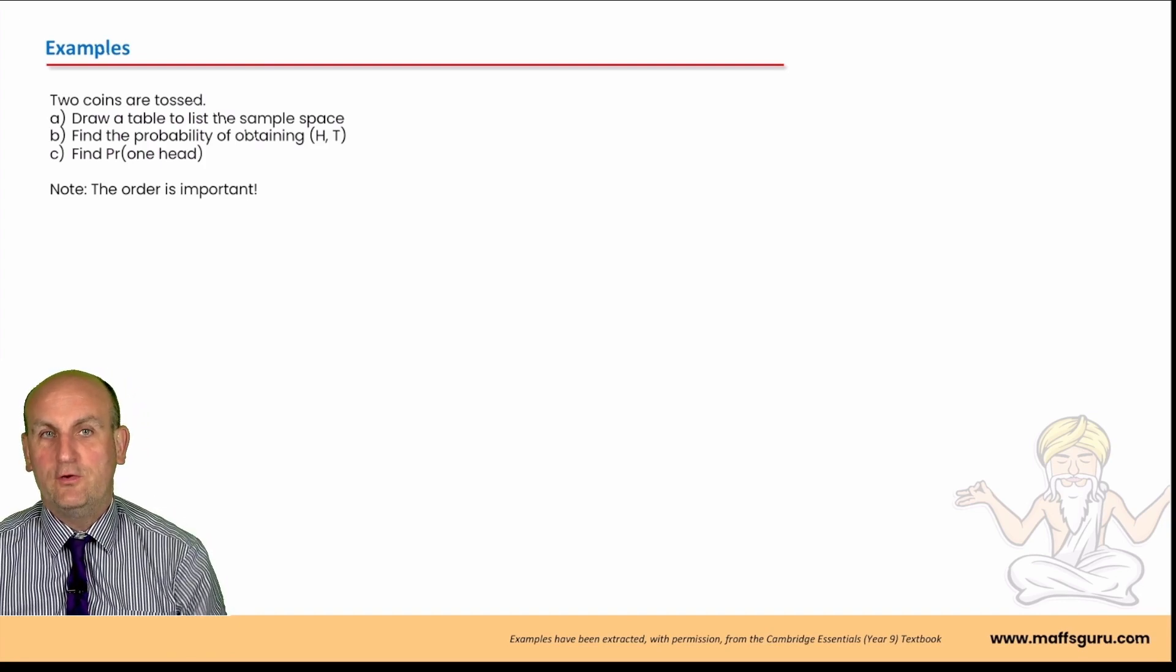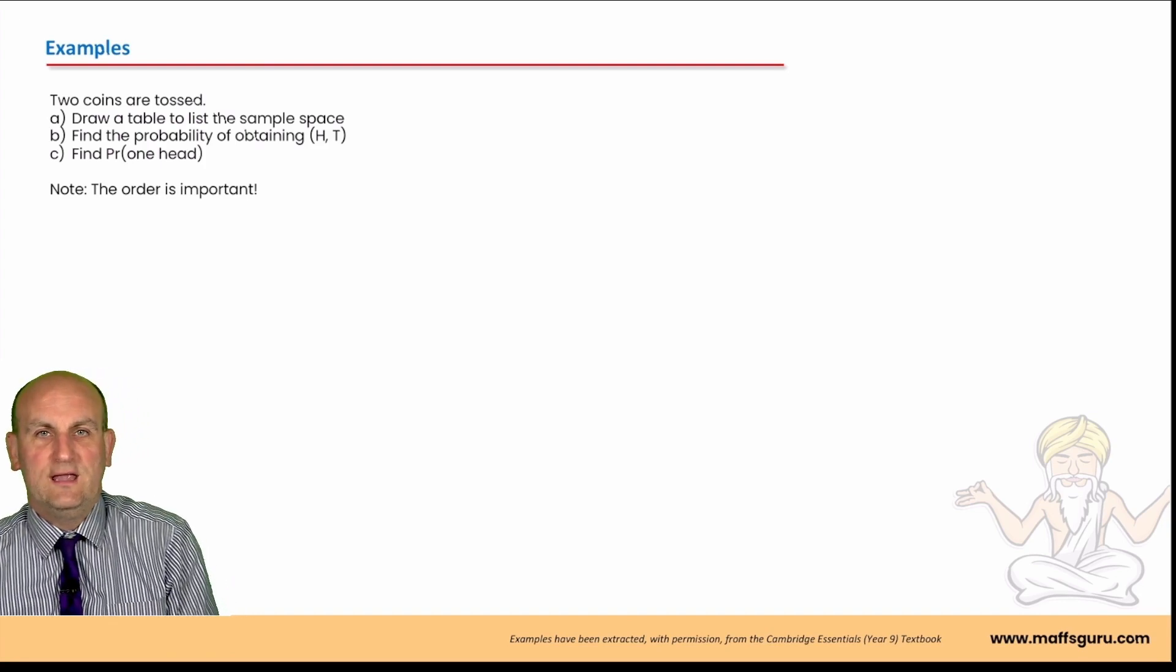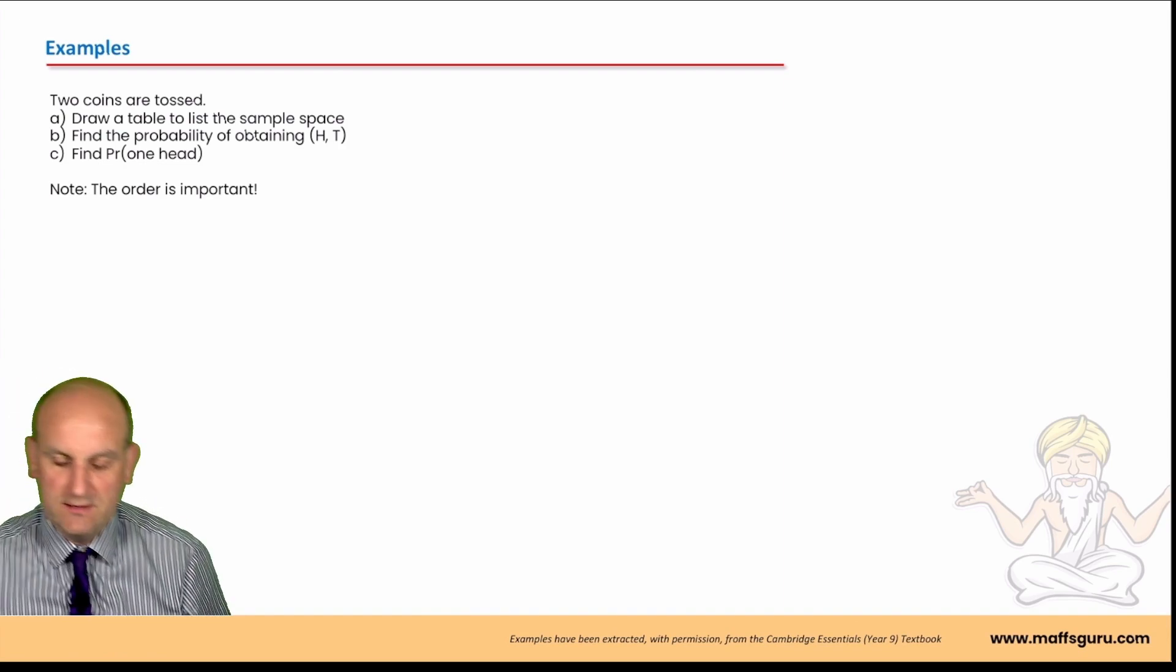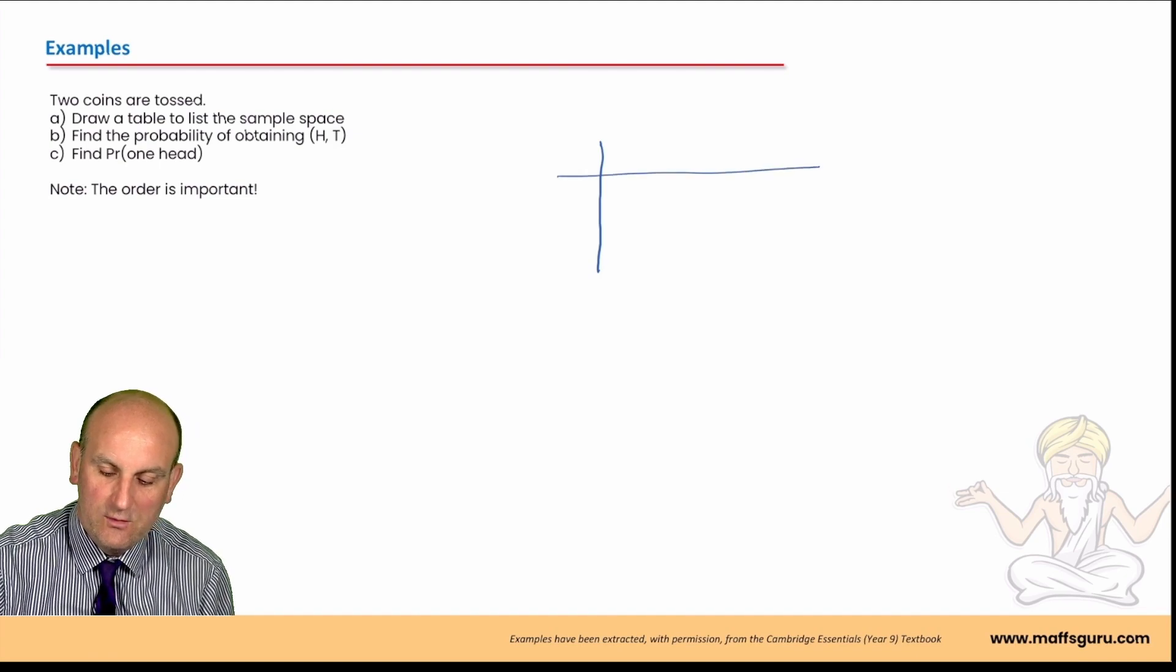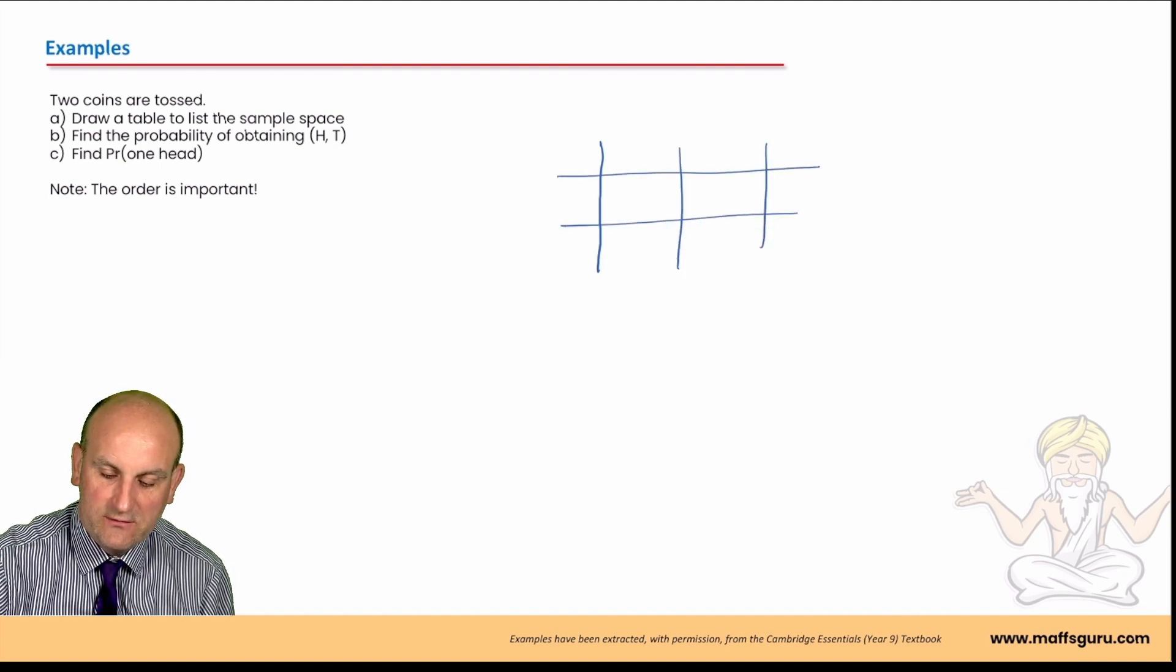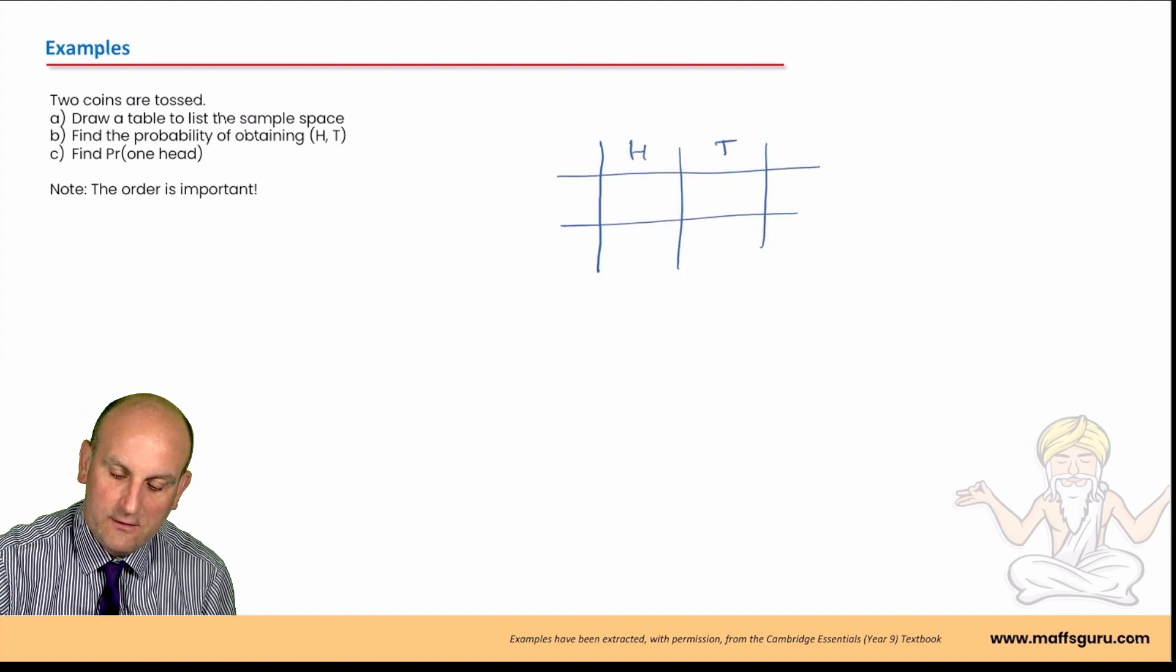I've got a couple of examples. Let's see what we've got. Two coins are tossed. Draw a table to list the sample space. So, draw a table to list the sample space. Now, we've already done this one here, but let's just do it. So, we've got head and we've got tail, we've got head and we've got tail.